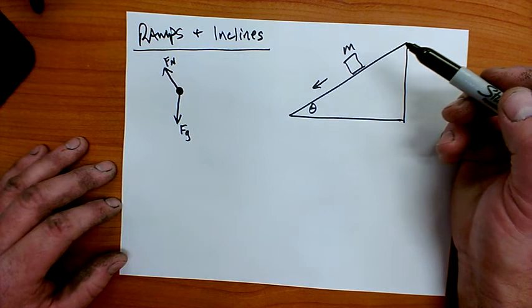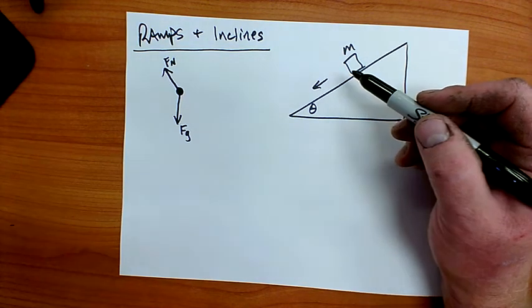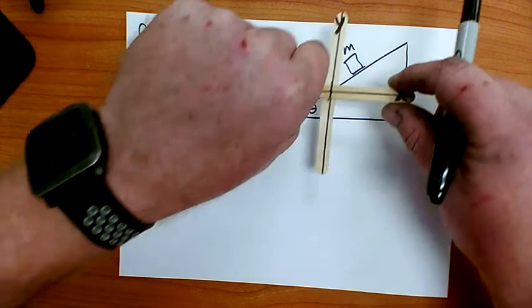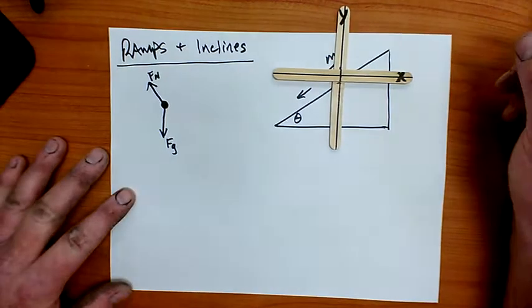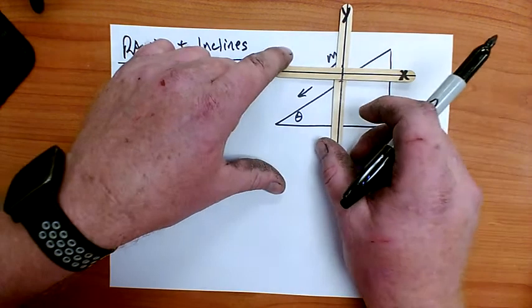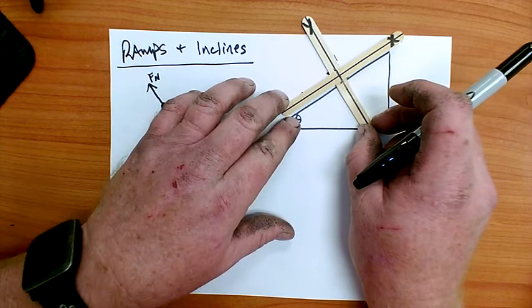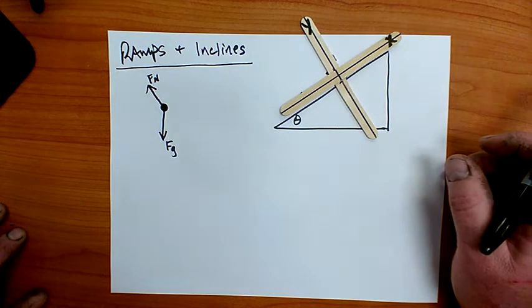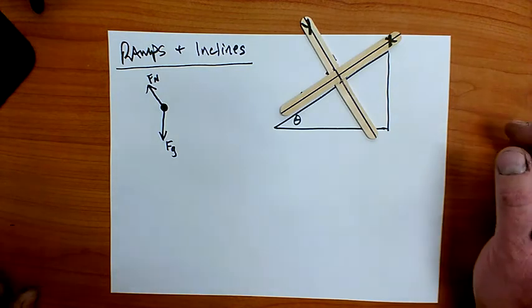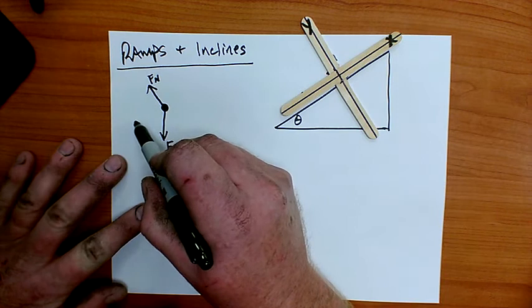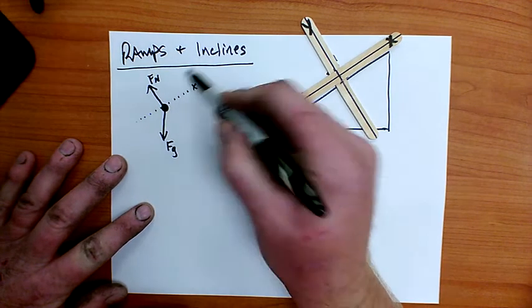What I want to do is arrange my coordinate system so that it lines up with the acceleration. Instead of a standard x-is-horizontal, y-is-vertical system, I'm going to rotate this so that the surface of the ramp becomes my x direction. I'm rotating my axes, and on my diagram I can illustrate that — that's my x direction.